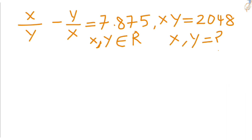The question is x by y minus y by x equal to 7.875. They are also giving xy equal to 2048. x and y are real numbers. Find x and y values.